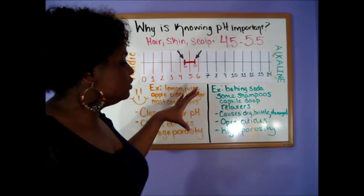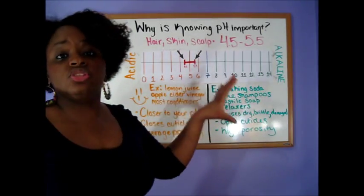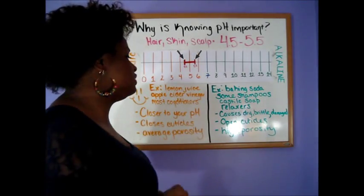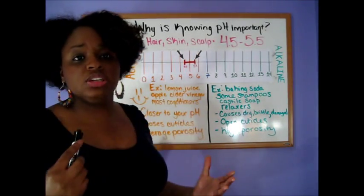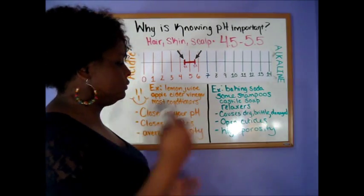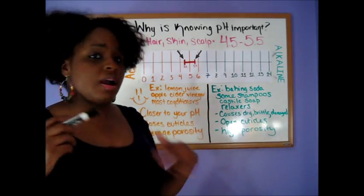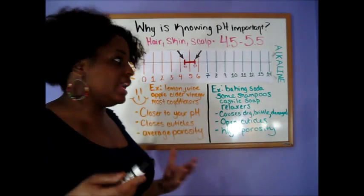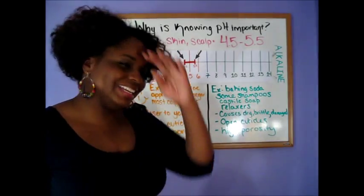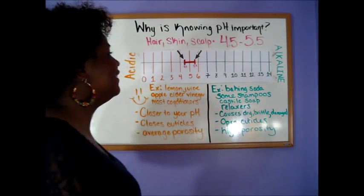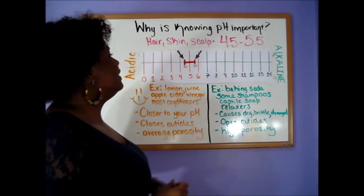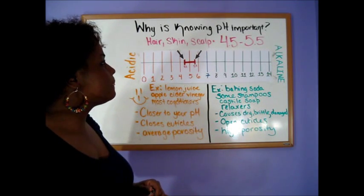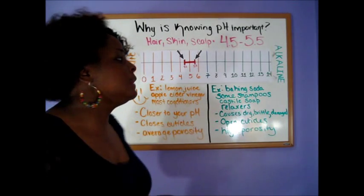Now when you use alkaline solutions, it can cause your hair to be dry, it can cause it to be brittle or damaged. So usually what happens is it opens your cuticles and it creates your hair to turn into a highly porous type situation. It creates high porosity in your hair if that makes sense. It's kind of late and I'm doing these videos kind of late, so my mind is just going crazy. So anyway, I hope that makes sense to you, that you need to basically know the pH of your solutions.